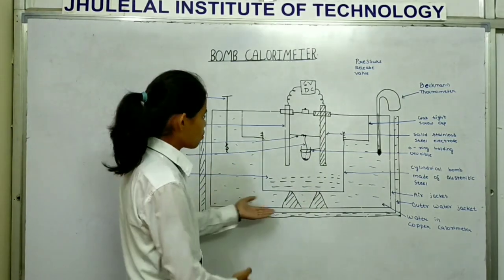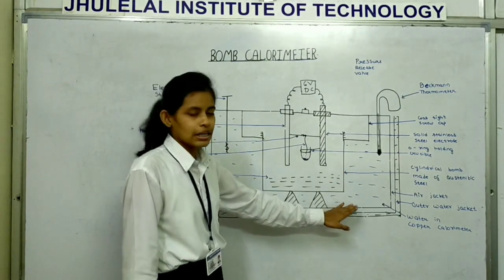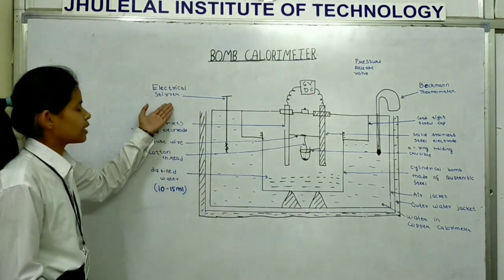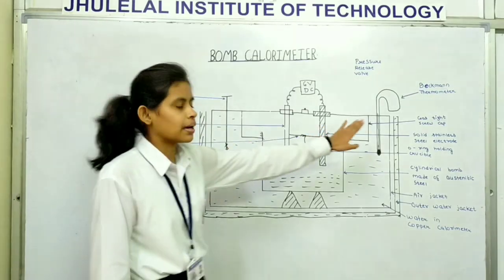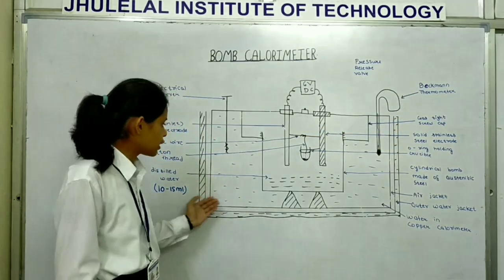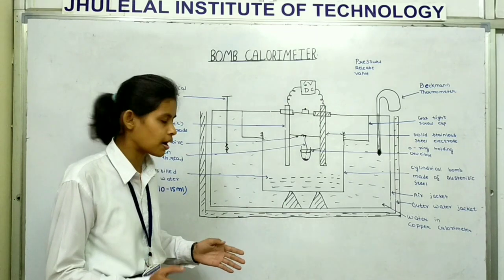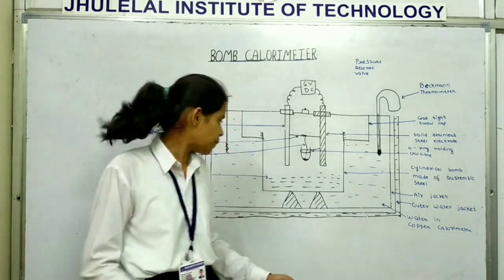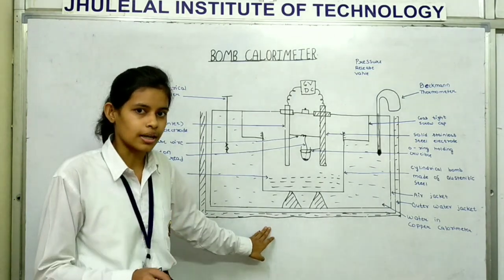The bomb is placed in copper calorimeter which includes the electrical stirrer and Beckmann thermometer. The copper calorimeter is surrounded by air jacket and the air jacket is surrounded by outer water jacket.